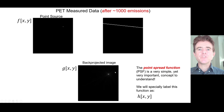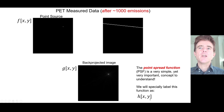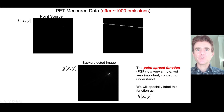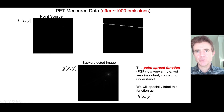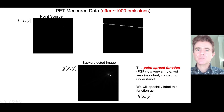We label that response as the point spread function and give it the function name h — the kernel, the point spread function h as a function of x and y. Normally for the PSF to be practical, we'd place the point source in the middle of the field of view to capture this response centrally and capture as many of the tails as possible, since this spreads from minus infinity to plus infinity, or at least the dimensions of the matrix. The key idea is that a point source has been replaced by a point spread function in the back-projected image.